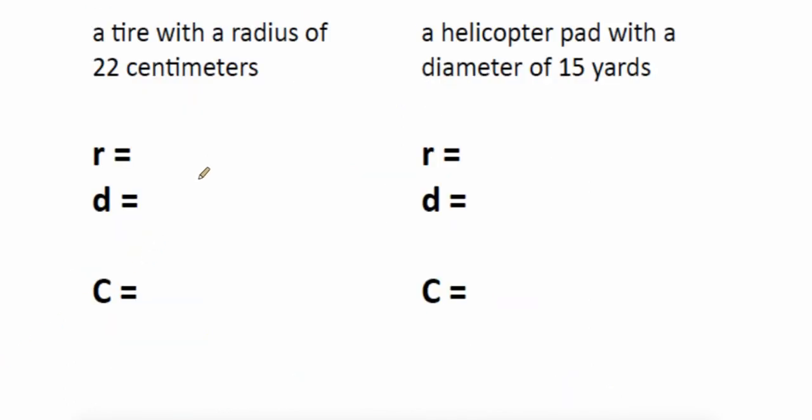Two more and then we're done. A tire has a radius of 22 centimeters. Remember radius is halfway across. Diameter is all the way across, so diameter is twice the distance or 44 centimeters.